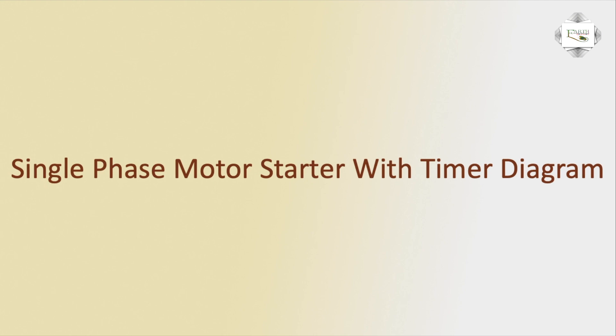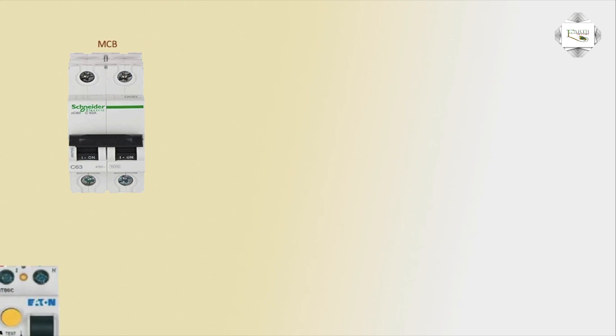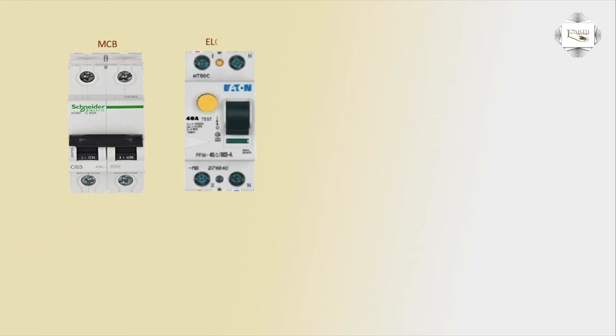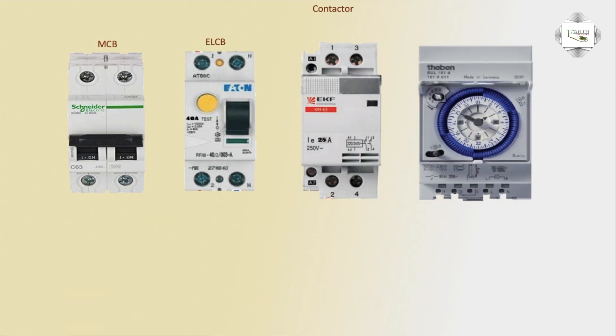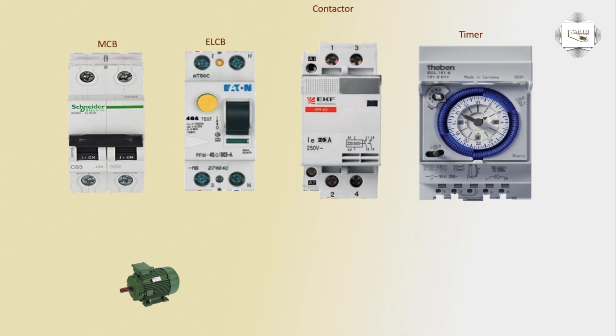Hello viewers, today I discuss the single phase motor star with timers diagram. First, FCB — DP, double pole circuit breaker or ELCB, earth leakage circuit breaker — or magnetic contactor, or timer, or single phase motor.